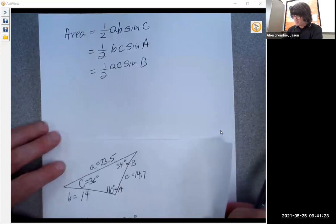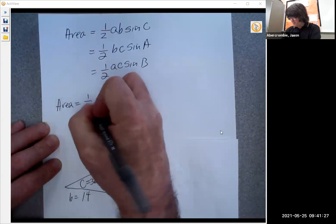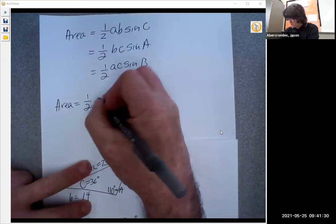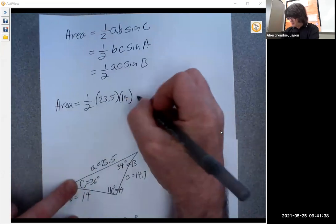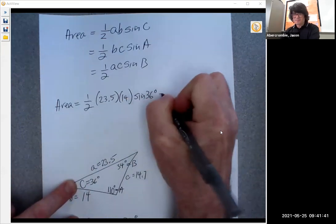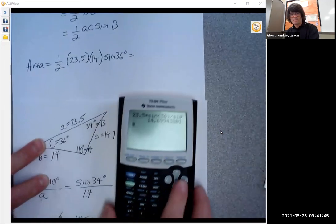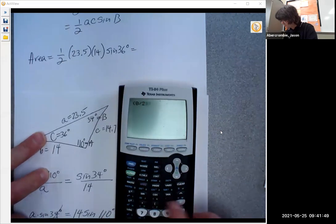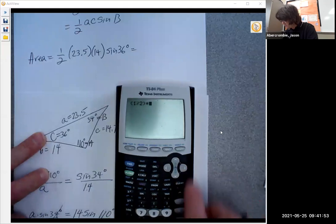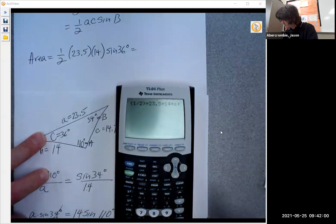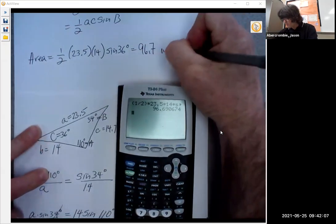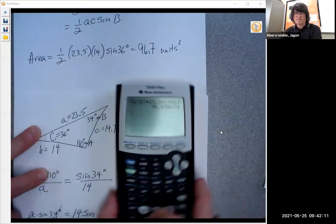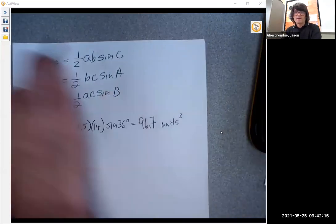I'm just going to pick, I don't really care which ones I pick. We'll just do one half, about a times b. We'll just do 23.5 times 14. And so we've got a, b. Now we need angle C, sine 36. And you can see that would be one half times 23.5 times 14 times sine 36. And so the area there is 96.7 square units.